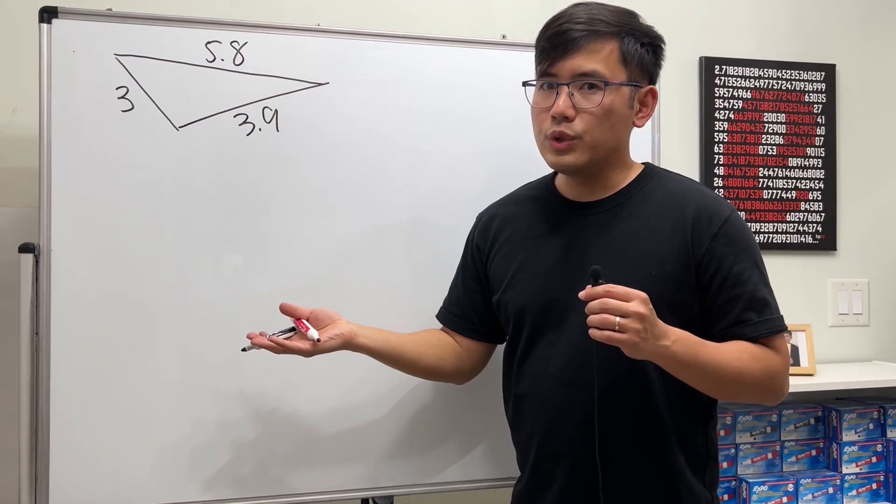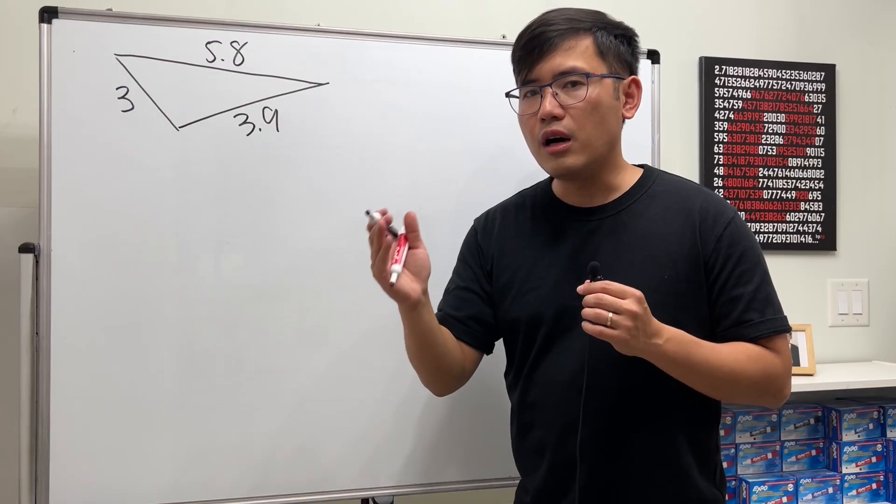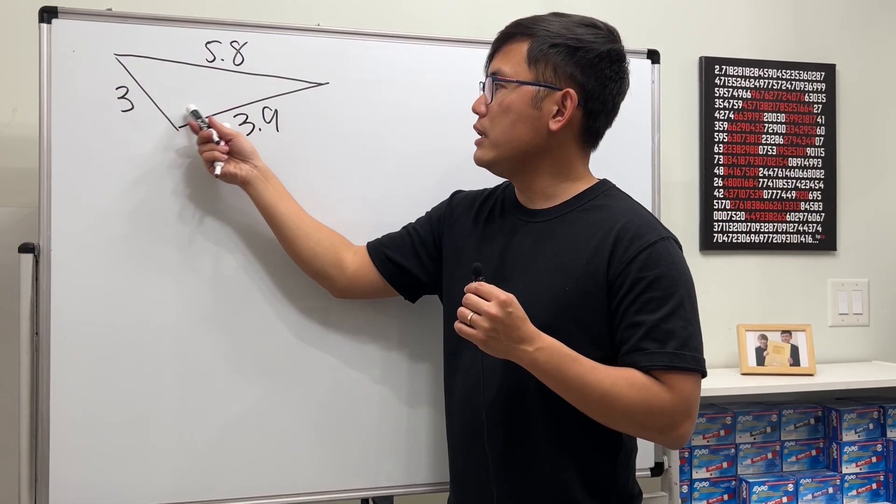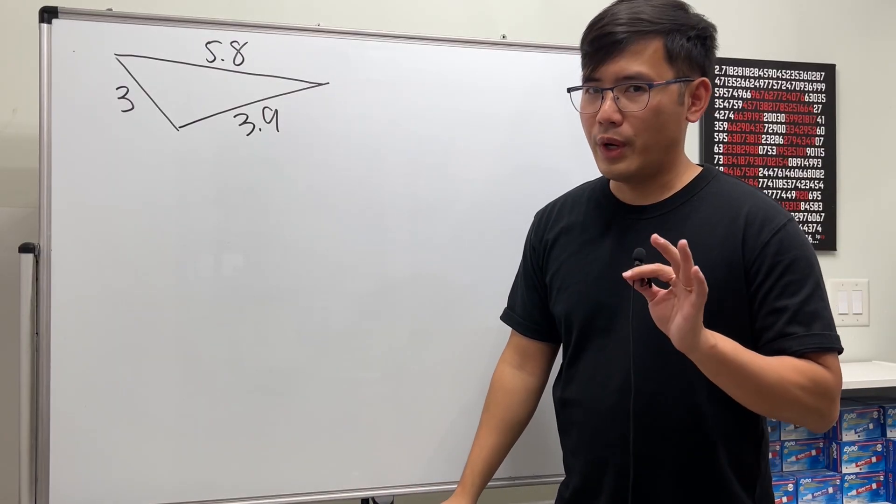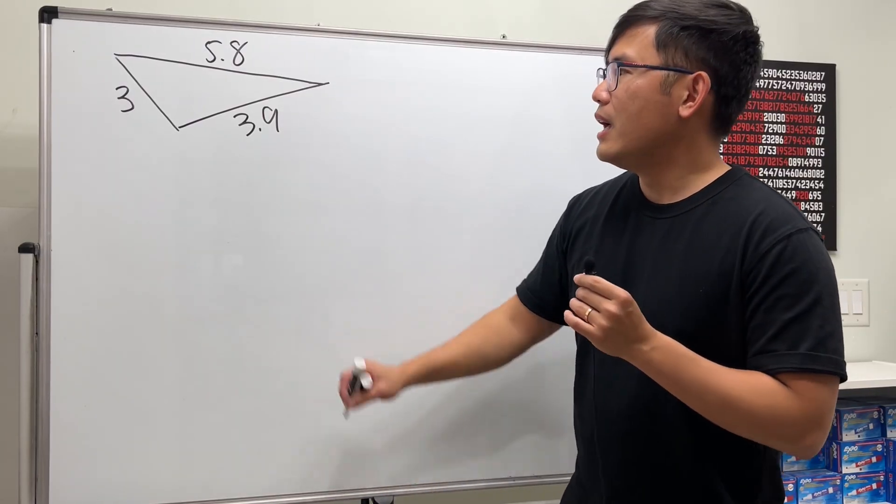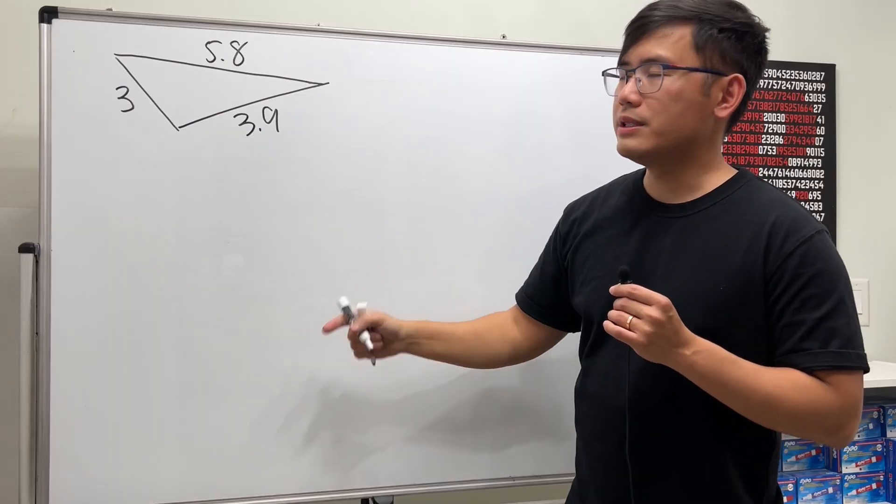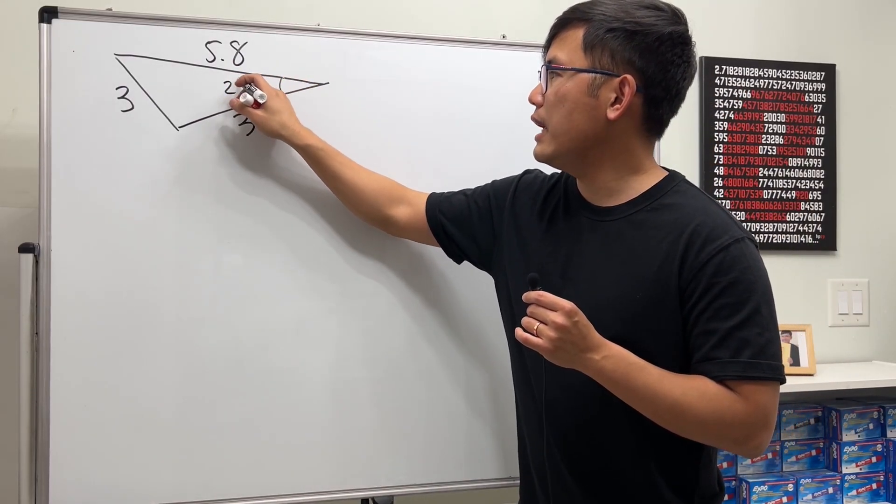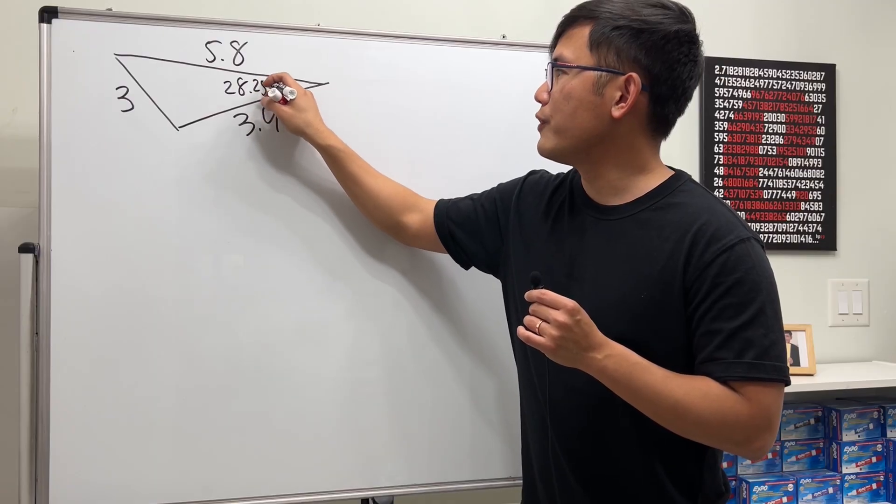And now, because we have all three sides, in fact, we can just use the law of cosine to solve the triangle, meaning find out all the missing angles. But wait, this is what I will do. I'm going to give them one of the smaller angles. Let's say this one right here. I will tell them that this right here is 28.25 degrees.